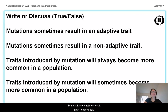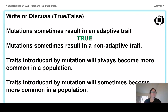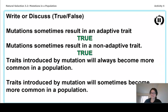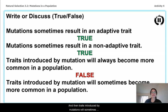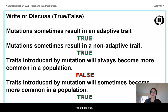Okay, so mutations sometimes result in an adaptive trait? That's true — we saw that with the ostrilopes. Mutations sometimes result in a non-adaptive trait? Yeah, that's also true. Traits introduced by mutations will always become more common in a population? Nope. And traits introduced by mutations will sometimes become more common in a population? Yeah, that's true. Hopefully you did well on that.